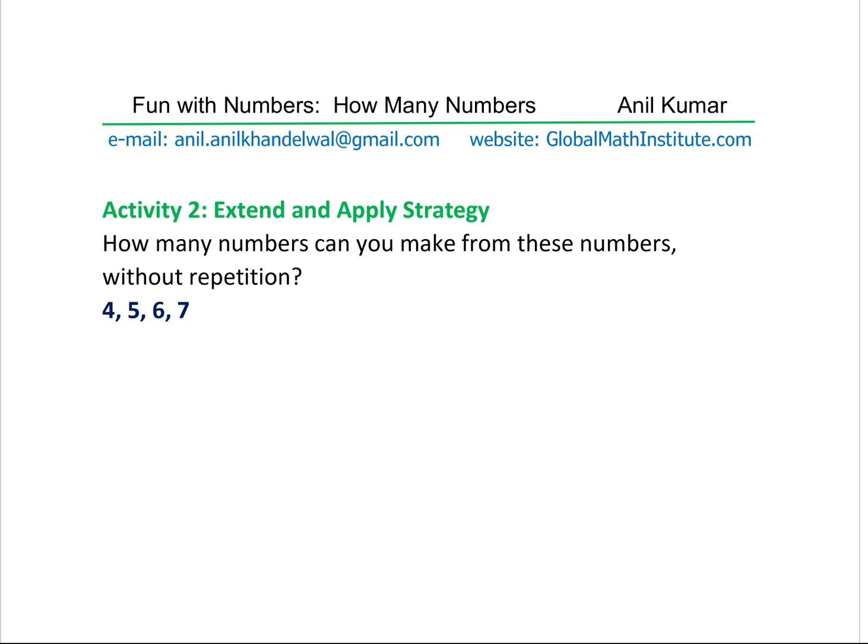So, that means if I increase the numbers, then also we can find a quick solution. Perfect. So, here is the second activity for you. I am calling this to be extended, right? So, it is an extended activity where you should be applying the strategy learned and then find the answer. So, you can pause. Let us pause the video for some time and figure out the solution. So, the strategy here is to begin counting how many one-digit numbers are there, right? So, I am writing one, two-digit numbers. So, we have four digits now, right? Three-digit numbers. And four-digit numbers. So, let me read the activity. It is, how many numbers can you make from these numbers without repetition? The numbers are four, five, six, and seven. Right.